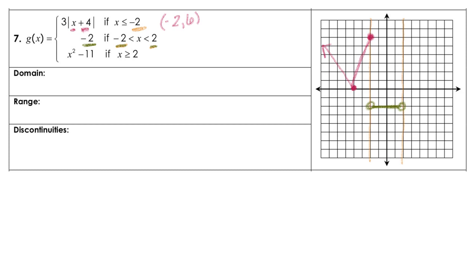Then we're going to have x squared minus 11. Let's plug in 2 there — that gives us 2 squared minus 11, so 4 minus 11, or negative 7. So we go over 2 and then down 7 — that point is a closed circle. The vertex is down at (0, negative 11), so the parabola is way below. This is turned upward, so it comes up through here. There's your parabola, and you can add an anchor point if you want.